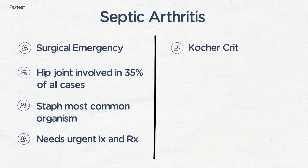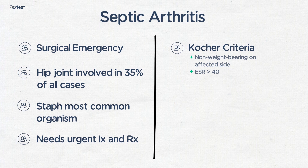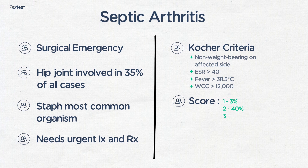You should be aware of the COCCA criteria for septic arthritis at the hip. This is a scoring system from 1 to 4. The criteria are non-weight-bearing on the affected side, an ESR of more than 40, a high fever, and raised white cells. If they score one of those, they have only a 3% chance of having septic arthritis, whereas all four gives a 99% chance. CRP is an independent variable, but a raised CRP and a non-weight-bearing limping child gives a 74% chance of septic arthritis.